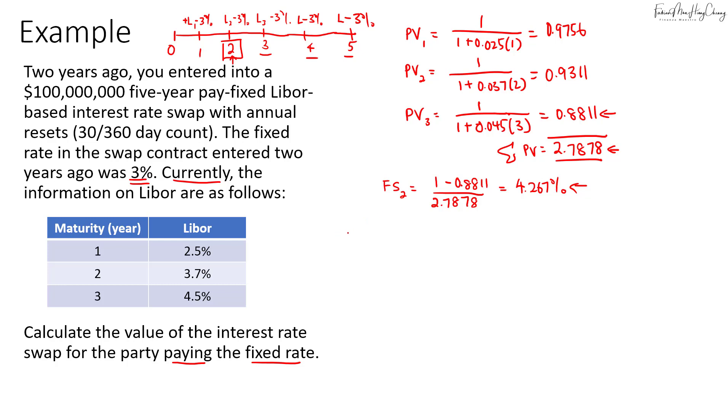So now to calculate the value of this contract. So what we'll do is for assuming you're paying fix, pay fix. So we'll take the latest rate, 4.267%. So we will receive 4.267% fixed, and then we close off the contract that we paid 3% on. So pay is an outflow.